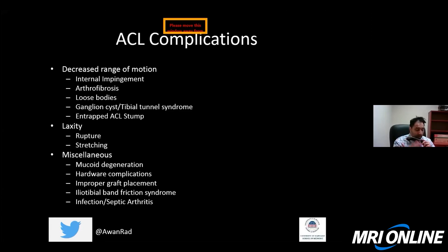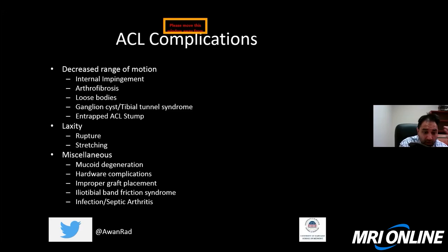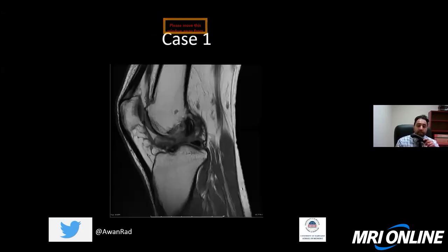Those were the ranges of ACL complications. To summarize: decreased range of motion complications include internal impingement, arthrofibrosis, loose bodies, tibial tunnel syndrome, and entrapped ACL stump. Laxity refers to rupture or stretching of the graft, occurring when the femoral tunnel is placed too far anteriorly. Miscellaneous complications are mucoid degeneration, hardware complications, improper graft placement, iliotibial band friction syndrome, and septic arthritis.